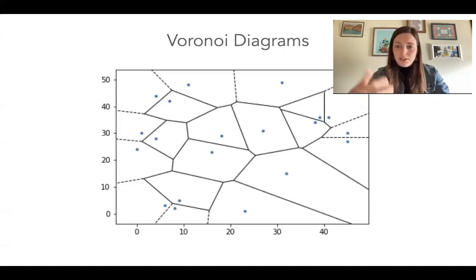You're going to create all these different cells and each cell needs to contain just one point that you started with. And we call these sites sometimes. So each cell contains one site. And then for every cell that you look at, each other point in that cell is going to be closest to the designated site.